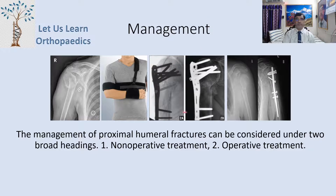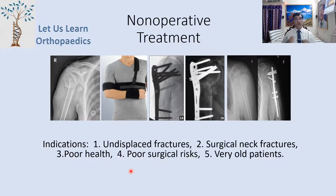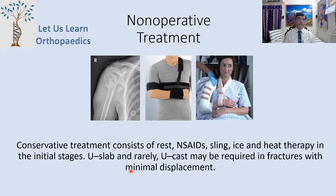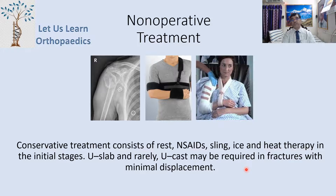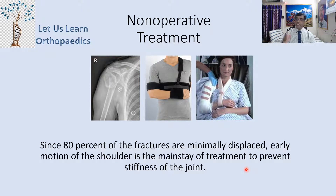For management, proximal humerus fractures can be treated under two broad headings: non-operative and operative. Non-operative indications include undisplaced fractures, surgical neck fractures, poor health, poor surgical risk, and very old patients. Conservative treatment consists of rest, NSAIDs, sling, ice and heat therapy initially, with U-slab or U-cast when needed. Since 80% of fractures are minimally displaced, early motion of the shoulder is the mainstay to prevent stiffness.